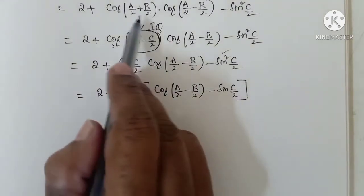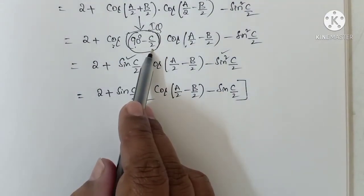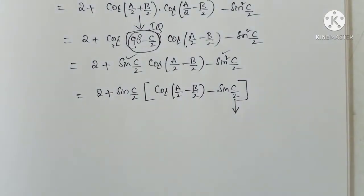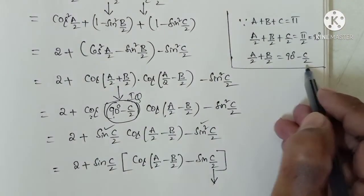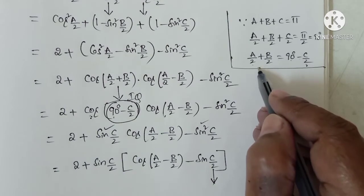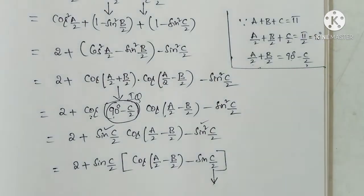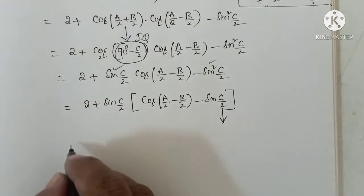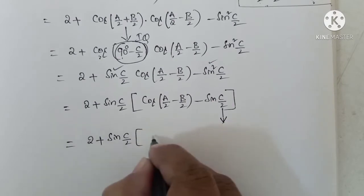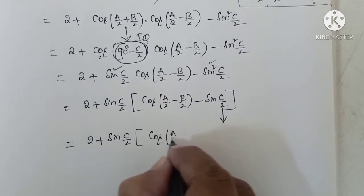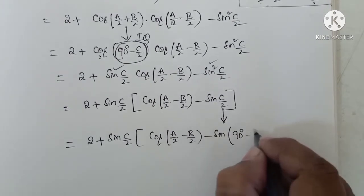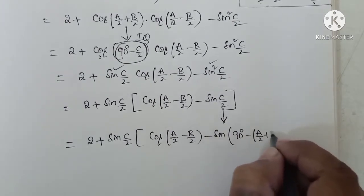In the third step, we replace c by 2 again. In the c by 2 place, we substitute 90 degrees minus (a by 2 plus b by 2). So minus c by 2 becomes plus c by 2, which equals a by 2 plus b by 2. This becomes minus of a by 2 plus b by 2. So now: 2 plus sin(c by 2) into cos(a by 2 minus b by 2) minus sin(90 degrees minus of a by 2 plus b by 2).